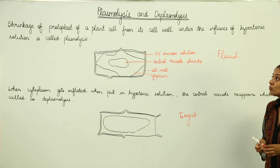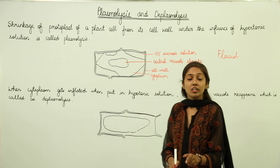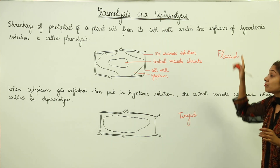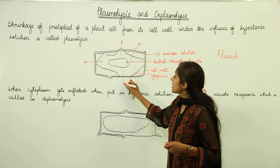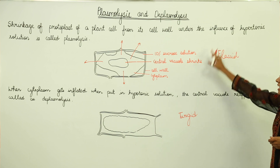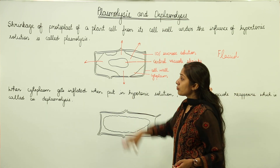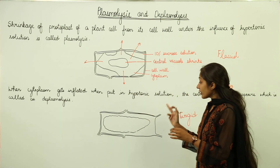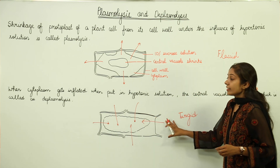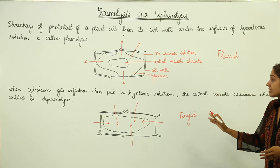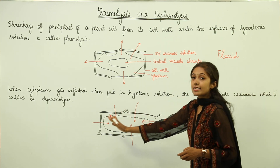In a plasmolyzed cell there is shrinkage of the protoplast because the cell is put into a hypertonic solution and water moves from inside to outside — this cell is called a plasmolyzed or flaccid cell and the process is plasmolysis or flaccidity. The opposite happens when the same cell is put into water: water enters from outside to inside, leading to the distended state where the cytoplasm gets inflated, the central vacuole reappears, and this is known as a deplasmolyzed or turgid cell — the process is deplasmolysis or turgidity.